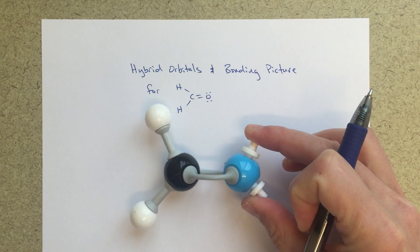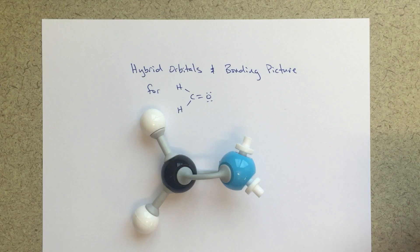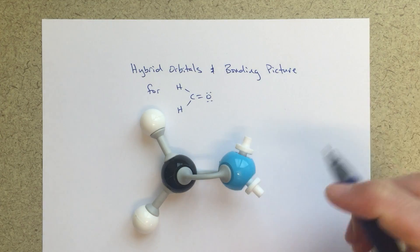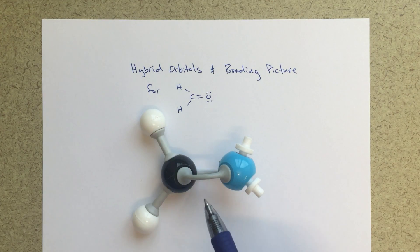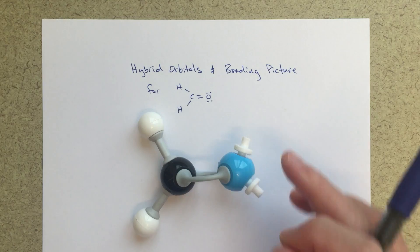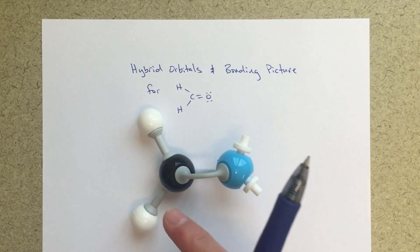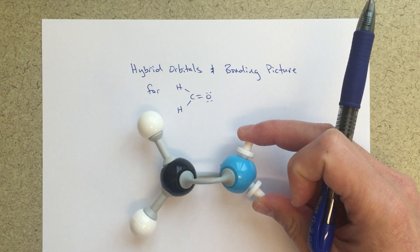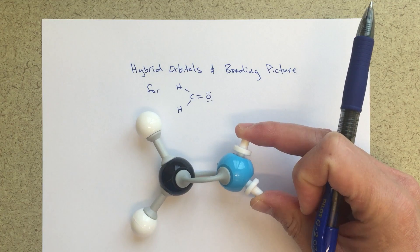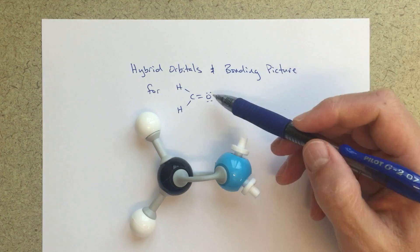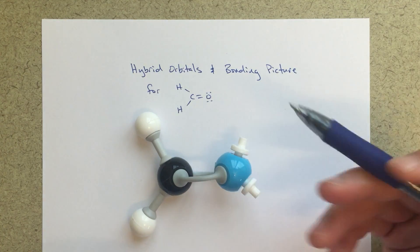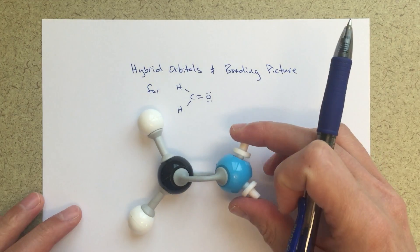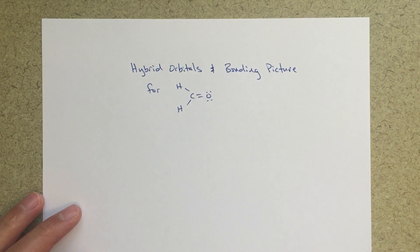To help us, I've also made this little model of this formaldehyde molecule. Here we've got our carbon with our two hydrogens, and then we've got a double bond between carbon and oxygen, and these two little spacer things represent our lone pairs of electrons. This model will sort of guide us as we're looking at this picture. So let's go ahead and get started.